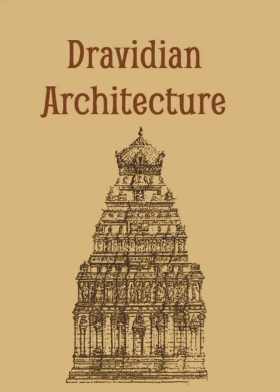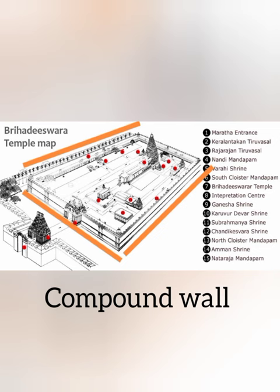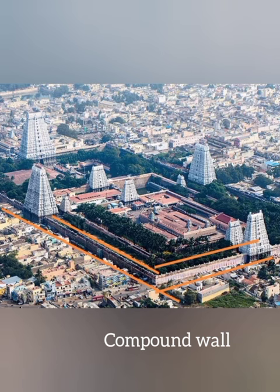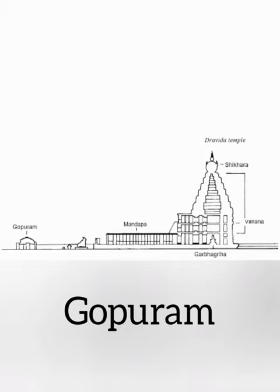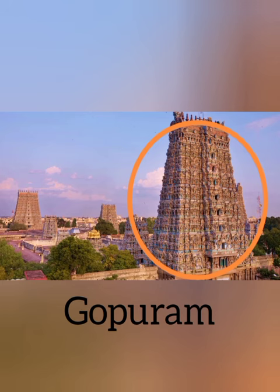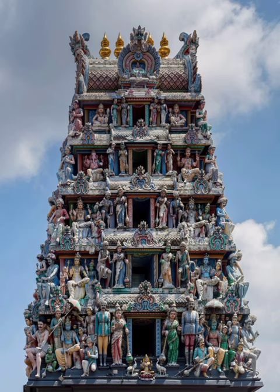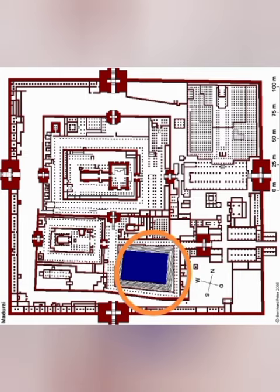Dravidian architecture, or the South Indian temple style, is a prominent temple architecture in South India. Temples are enclosed within a compound wall covering a large area, and have more than one entrance called Gopuram. Gopurams are highly decorative with carvings of gods or goddesses.